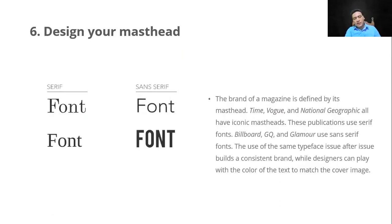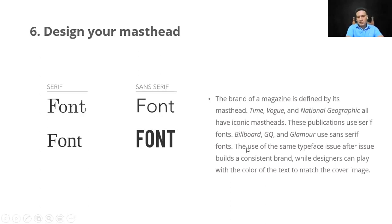Design your masthead — font type, etc. 'The brand of a magazine is defined by its masthead. Time, Bold, and National Geographic all have iconic mastheads. These publications use serif fonts; Billboard, GQ, and Glamour use sans-serif fonts.' It gives examples of fonts used by famous magazines. Using the same typeface issue after issue builds a consistent brand. Designers can play with text color against the cover image — that becomes the magazine's brand identity.